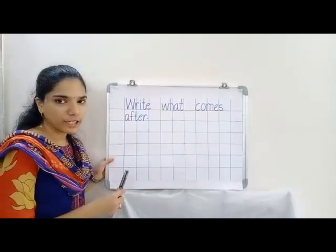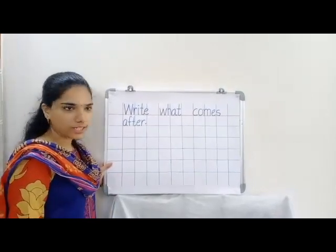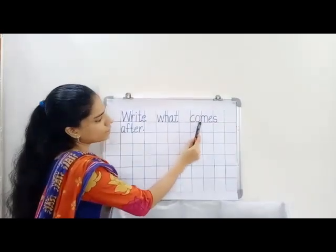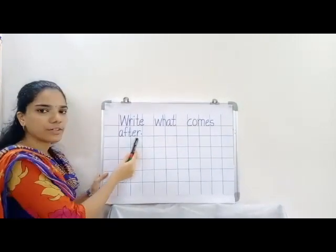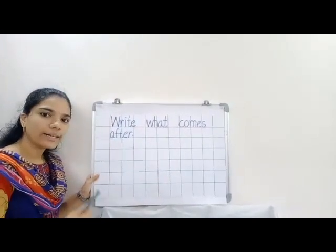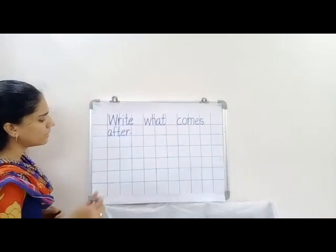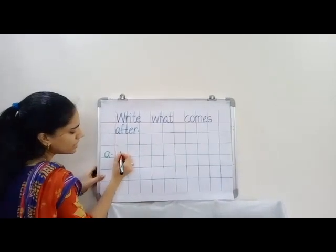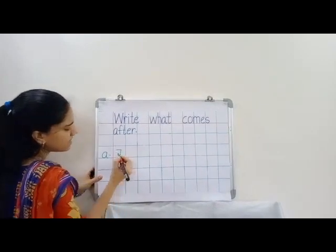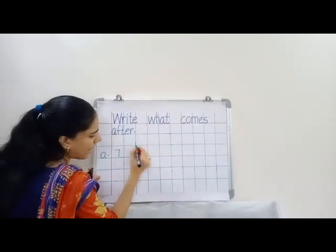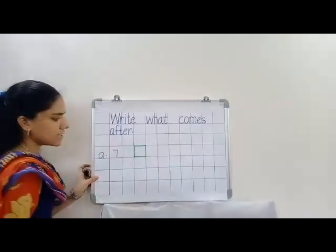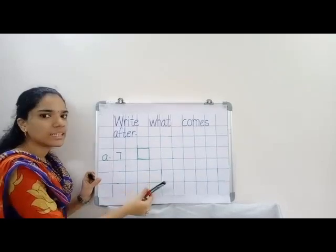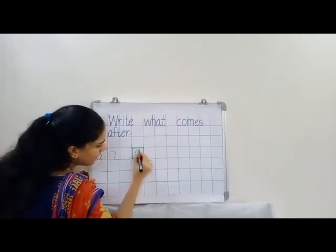Now children, I am going to tell you how to write after numbers in your notebook. Write what comes after. That means you have to write after numbers. Now leave a line and put a small dot in the margin. In the first box write 7, leave one box and draw one box here. Now tell me which number comes after 7. Here we have 7. After 7. Yes, it's 8. After 7, 8.